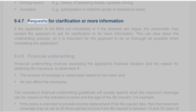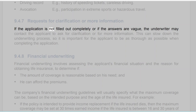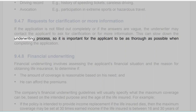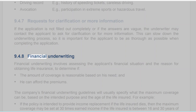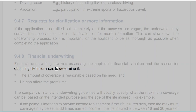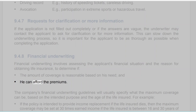Section 9.4.7: Requests for Clarification or More Information. If the application is not filled out completely or if the answers are vague, the underwriter may contact the applicant to ask for clarification or for more information. This can slow down the underwriting process, so it is important for the applicant to be as thorough as possible when completing the application. Section 9.4.8: Financial Underwriting. Financial underwriting involves assessing the applicant's financial situation and the reason for obtaining life insurance to determine if the amount of coverage is reasonable based on need and if he can afford the premiums.